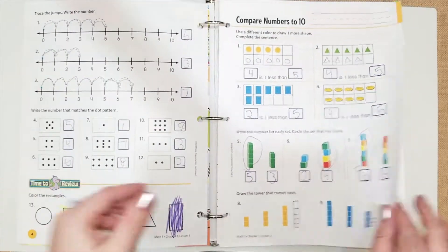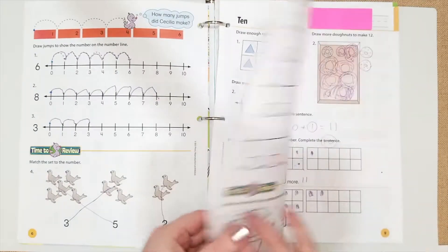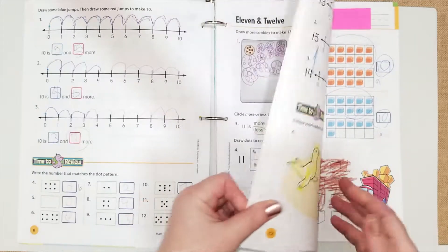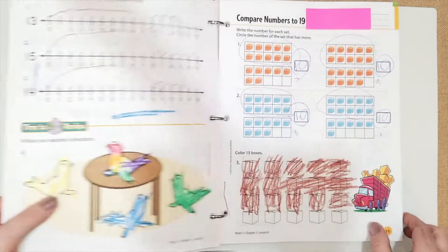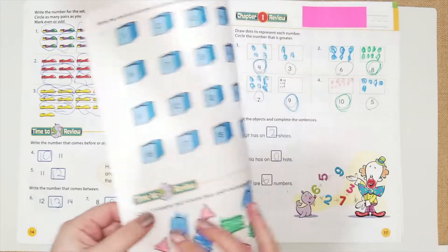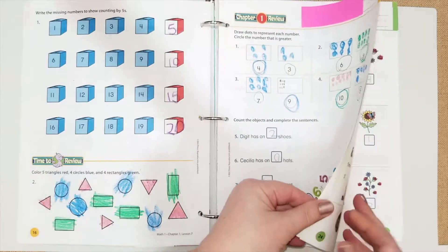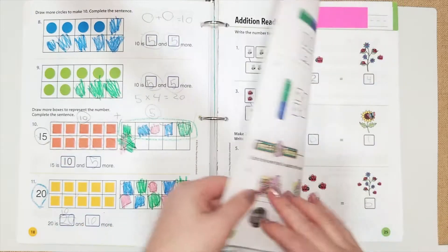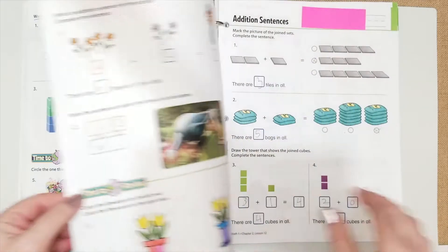After one, they're doing zero through ten, comparing numbers. I'm going to just go through here really quickly to show you guys what she did. Now, since we are starting first grade workbook in the middle of our first grade year, that's probably why it's a little easy. Because we kind of already did this already.